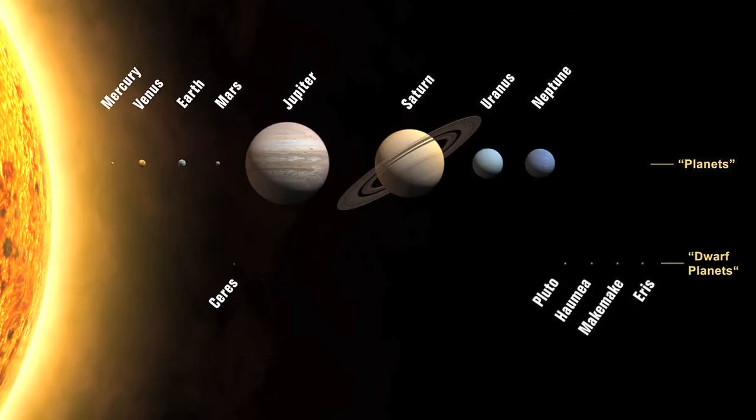Uranus, Neptune, look how big they are. But look how tiny Earth, Mercury, Venus, and Mars, and especially Pluto are in regard to Jupiter and Saturn, Uranus and Neptune. Really puts things into perspective.